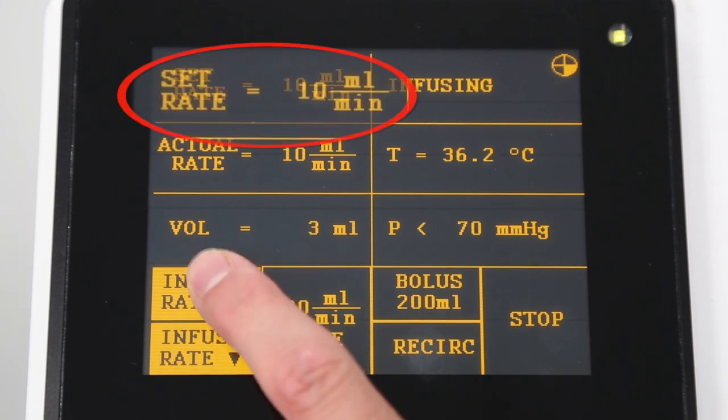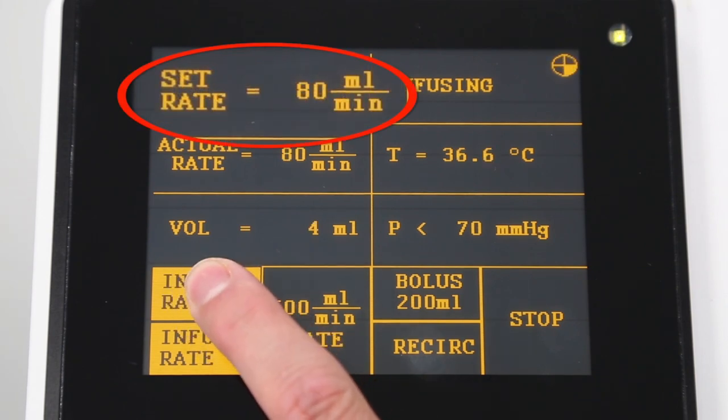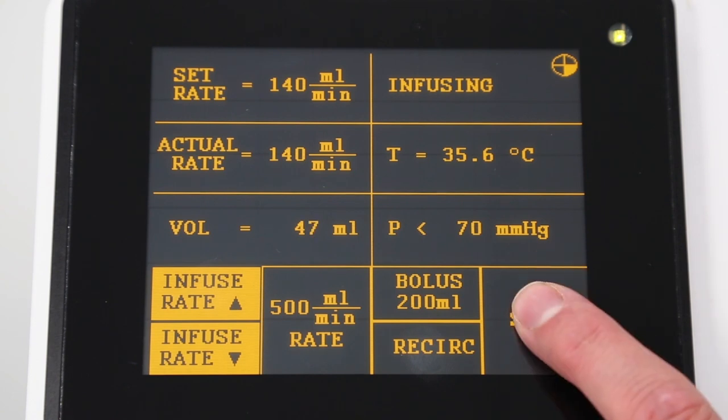Press the up and down arrows to increase or decrease the infusion rate. Press and hold to change the rate quickly. Fluid will be precisely warmed at all infusion rates. You could press the stop button at any time.